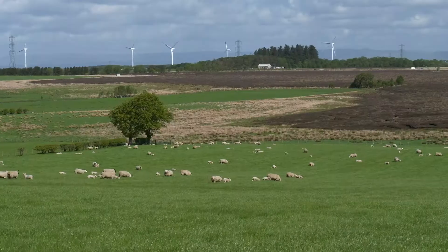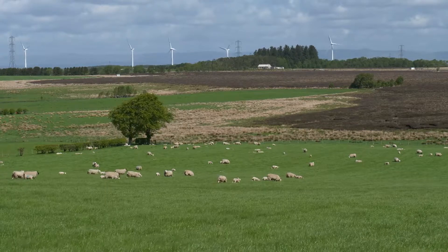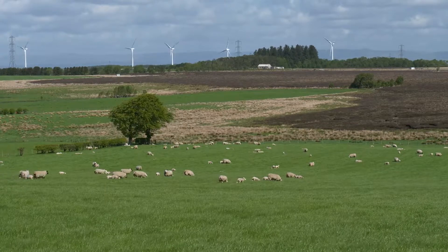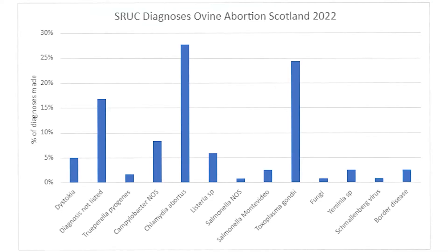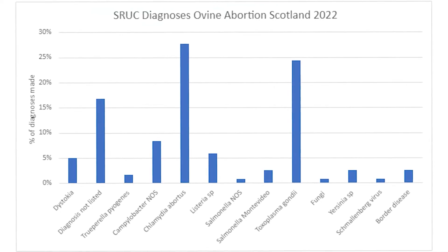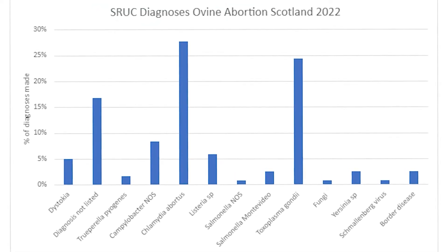The most common causes of abortion in sheep — the two big ones that you've probably all heard of — are Enzootic Abortion, or EAE, and Toxoplasmosis. Those are the two main ones we talk about, but there are also a few other things that can cause abortion in sheep.